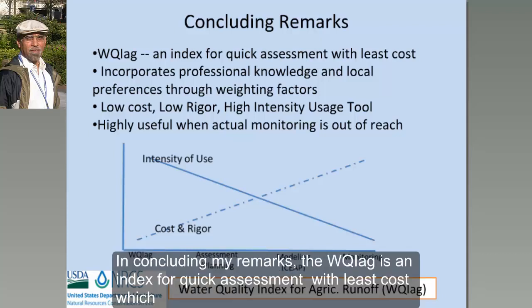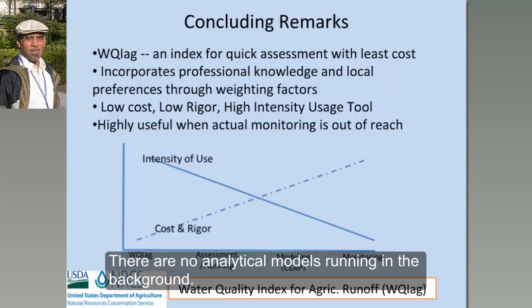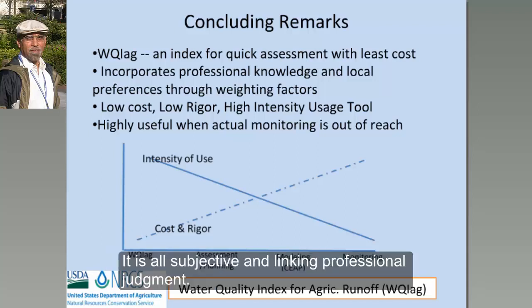In concluding my remarks, the water quality index for agriculture is an index for quick assessment with least cost, which incorporates professional judgment and knowledge. There is no analytical model running in the background like APEX or anything like that. It's all subjective ranking — what we call professional judgment.